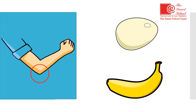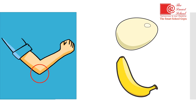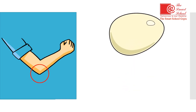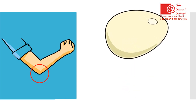Elbow — now choose the picture of the same beginning sound: egg or banana? Right — egg. Eh-elbow, eh-egg — both begin with the same sound.